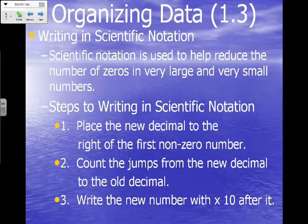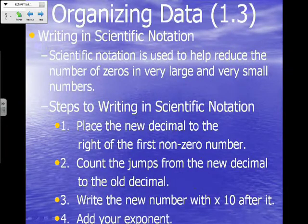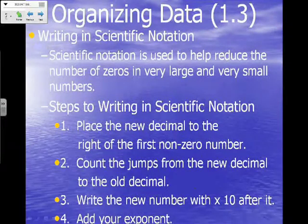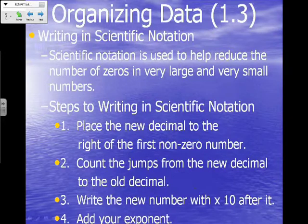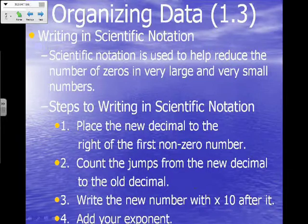The third step is to write the new number with times 10 after it. The times 10 represents the powers of 10. Every decimal place that you move, you're moving a power of 10. So if you move three decimal places, you're moving times 10 to the third power. And then number four, you're going to add your exponent. Pause the tape if you need to get all four of these written down.